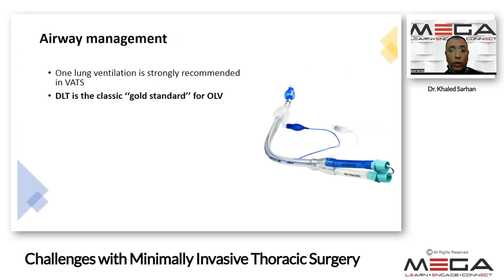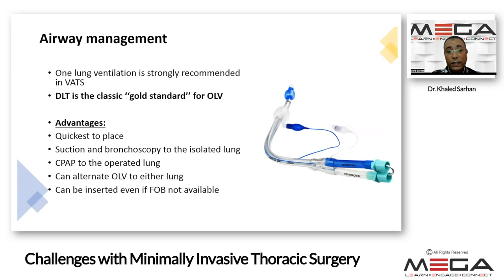The airway management: one lung ventilation is strongly recommended during video-assisted thoracoscopy surgery. The double lumen tube is considered the gold standard for one lung ventilation because it is easy to place if the patient has a normal airway. We can suction and do bronchoscopy to the isolated lung, apply CPAP to the operated lung, alternate to either lung one lung ventilation when required, and insert it blindly even if fiber optic is not available.